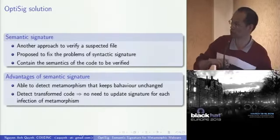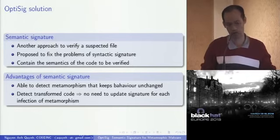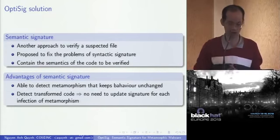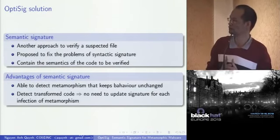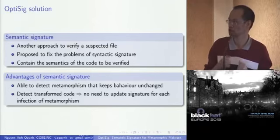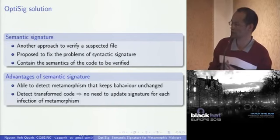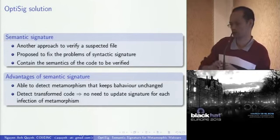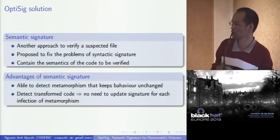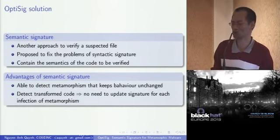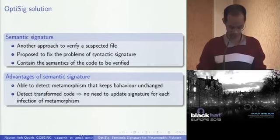Here comes the OPTISIG solution. With OPTISIG, we propose a semantic signature, not a syntactic signature, as another approach to verify suspected files. A semantic signature contains the semantics of the code to be verified. The advantage is that we can detect metamorphics that transform themselves while keeping behavior unchanged. If behavior is unchanged, we can detect that. And we don't need to update the signature for each infection of the metamorphic anymore.